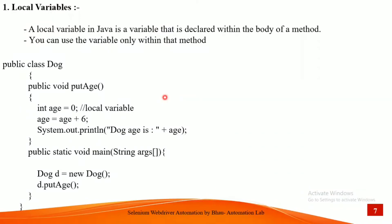For local variables, the definition is: a local variable is a Java variable that is declared within a body or method. If any variable is declared inside a single method body, it is called a local variable in Java. You can use the variable only within that method — you can't use a local variable outside the method.